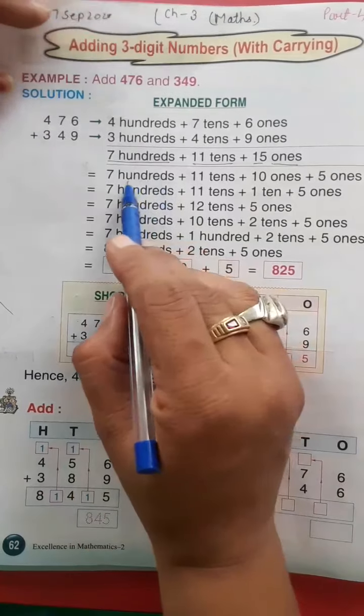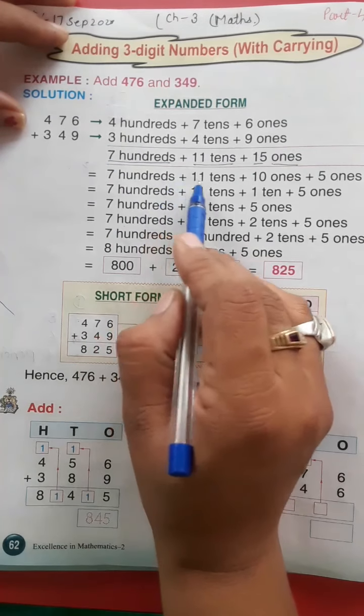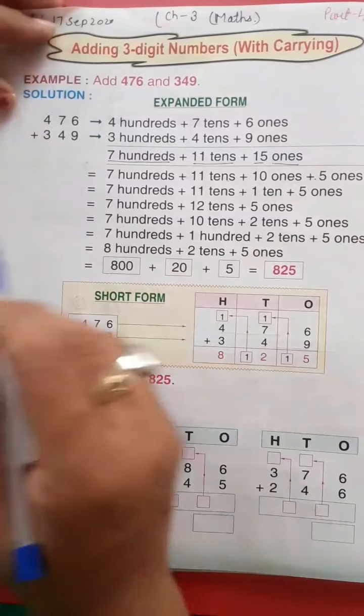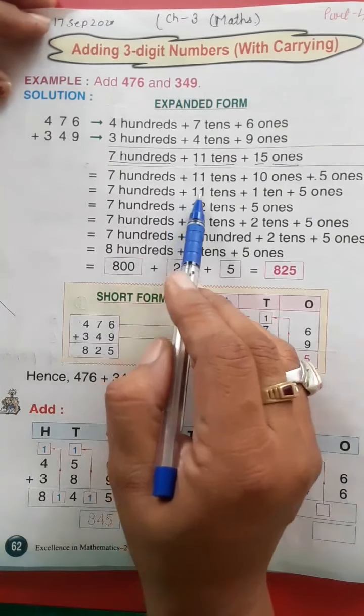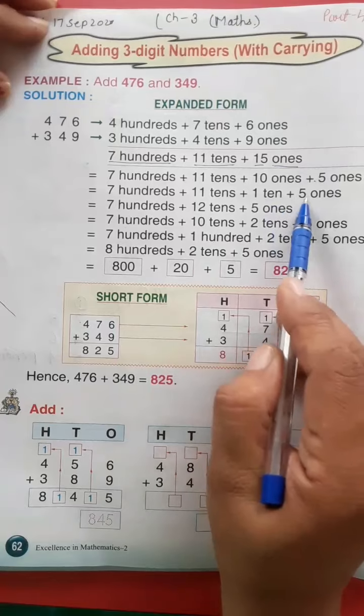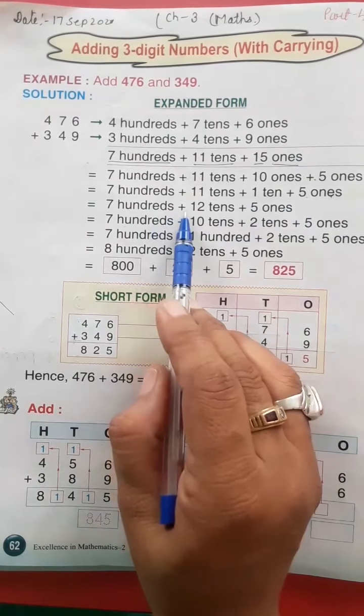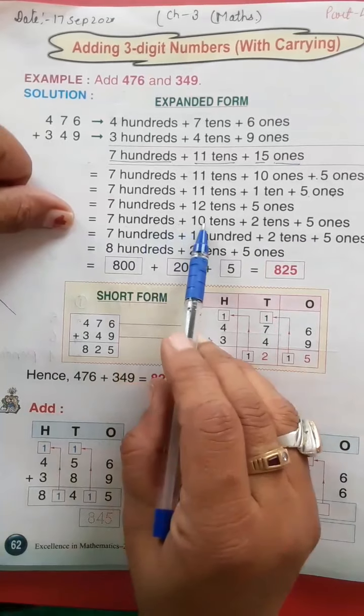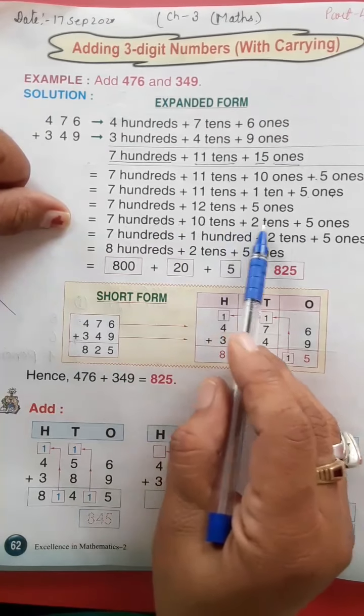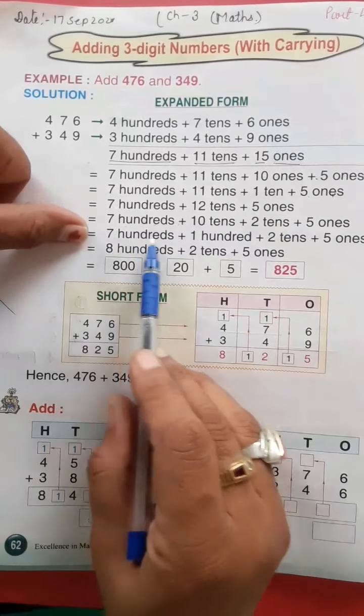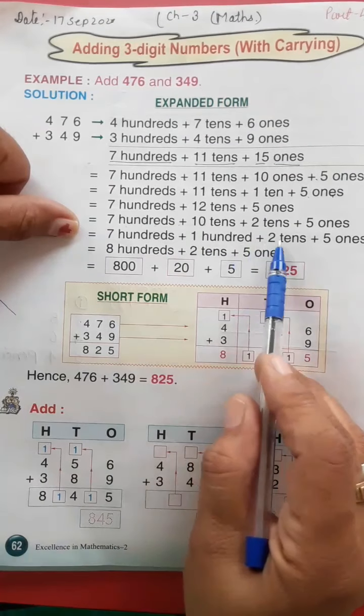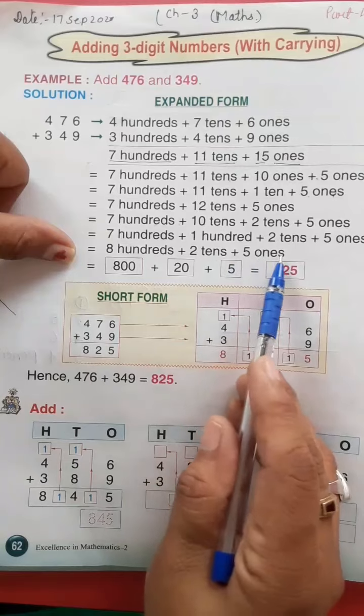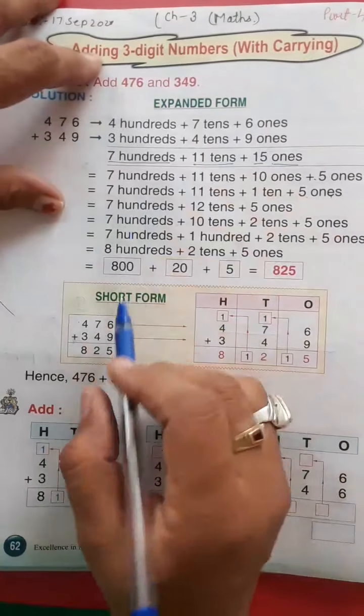Yeh hum likhenge equal to seven hundred plus eleven tens plus fifteen ones. Seven hundred plus eleven tens plus one ten plus five ones. Seven hundred plus twelve tens plus five ones. Seven hundred plus ten tens plus two tens plus five ones. Seven hundred plus one hundred plus two tens plus five ones. Eight hundred plus two tens plus five ones.